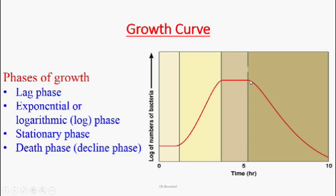After the stationary phase, bacteria utilize all remaining nutrients and the culture medium accumulates waste materials. Because of the toxic effects of waste material and lack of nutrients, bacteria start to be destroyed. This is the death phase or decline phase — the final of the four phases in the bacterial growth curve: lag, exponential, stationary, and death.